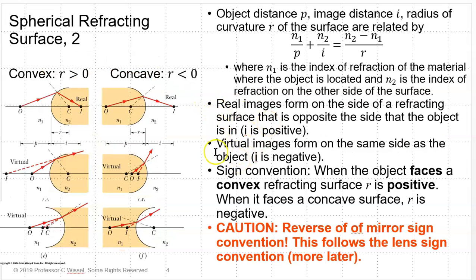Real images form on the side of the refracting surface opposite the side that the object is on. Virtual images form on the same side as the object, and I is negative. Sign convention: when an object faces a convex refracting surface, R is positive. When it faces a concave surface, R is negative. Be careful — this is the reverse of the mirror sign convention.